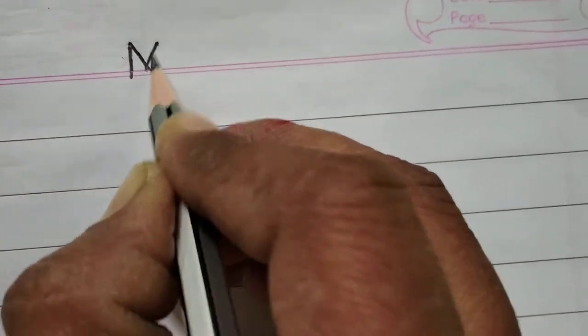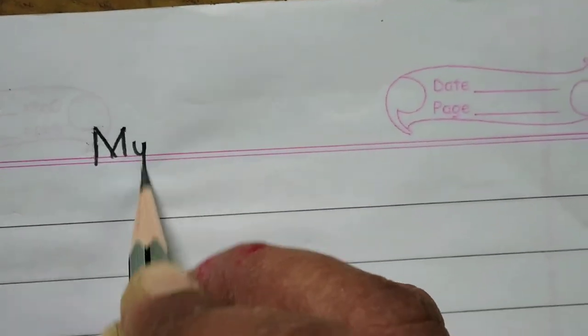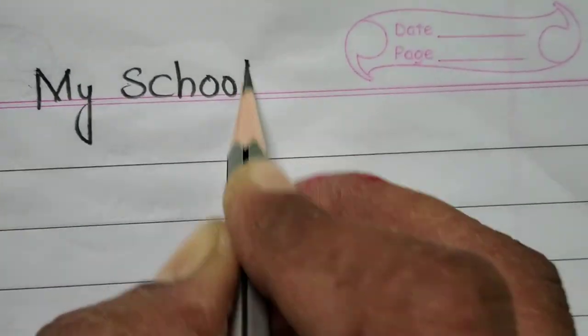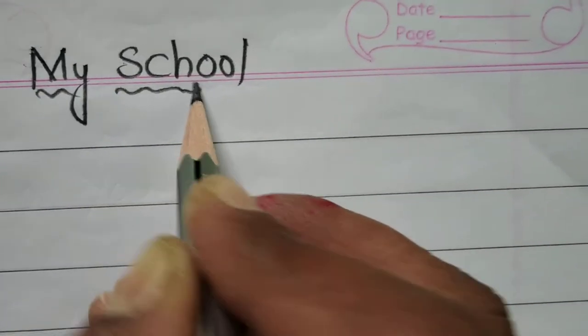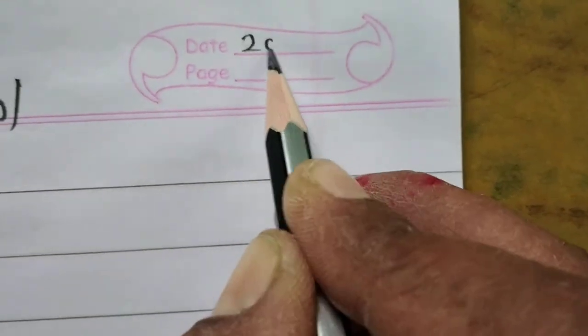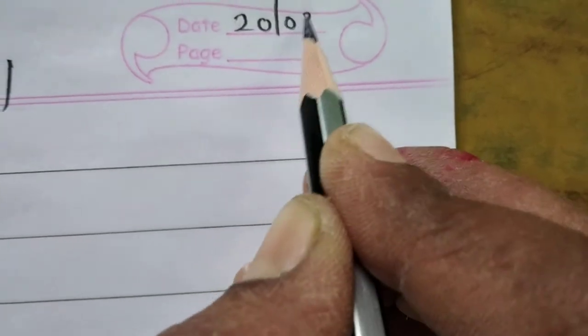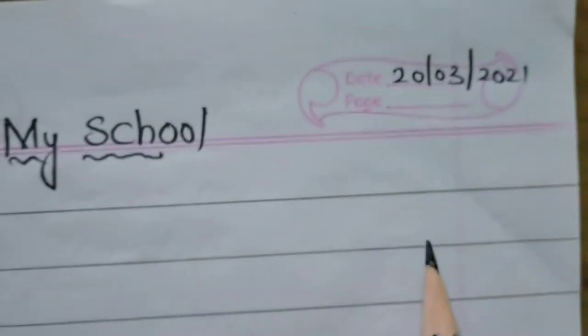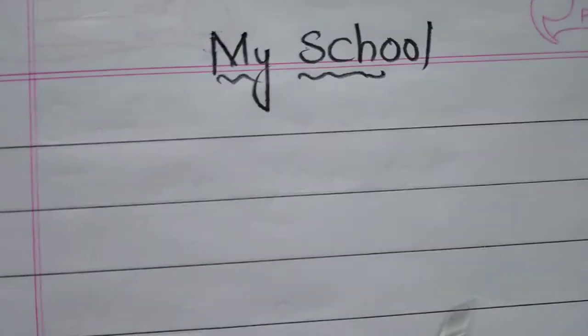Okay children, open your class workbook and keep the date and write here my school heading. My school. Now keep date here children. What is date today? 20-03-2021. My school. Now keep here children.